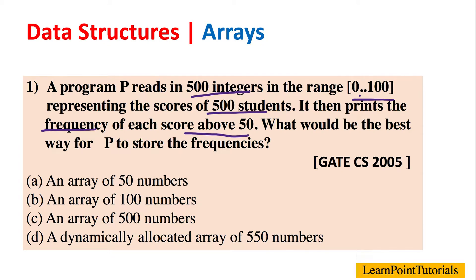Program P is reading 500 integers lying in the range of 0 to 100 — basically the test results of 500 students. P has to print the frequency of scores which are above 50. For example, it will tell you how many students scored 51, how many scored 52, and so on. Suppose two students scored 51 out of 500, and 15 students scored 52 marks.